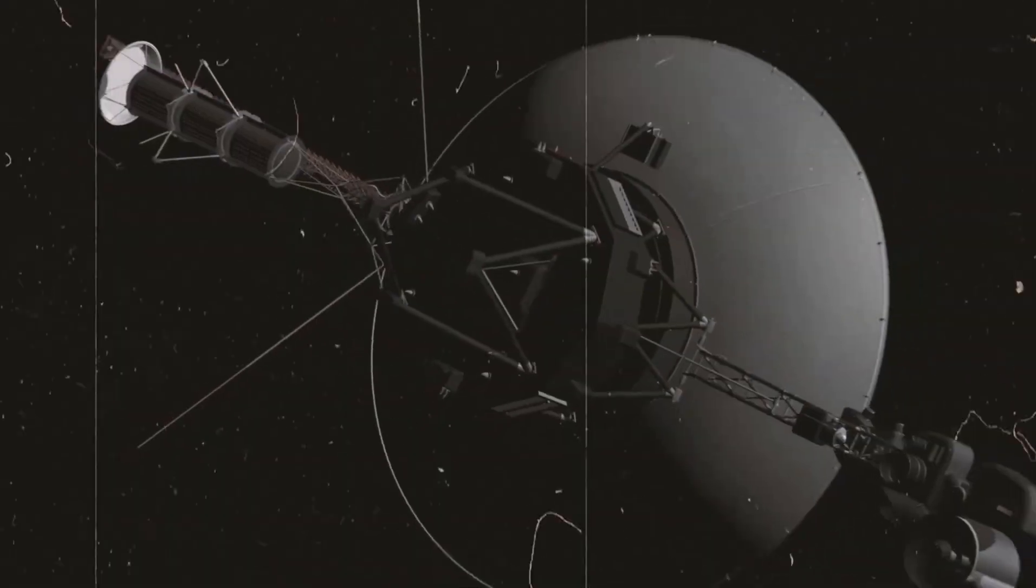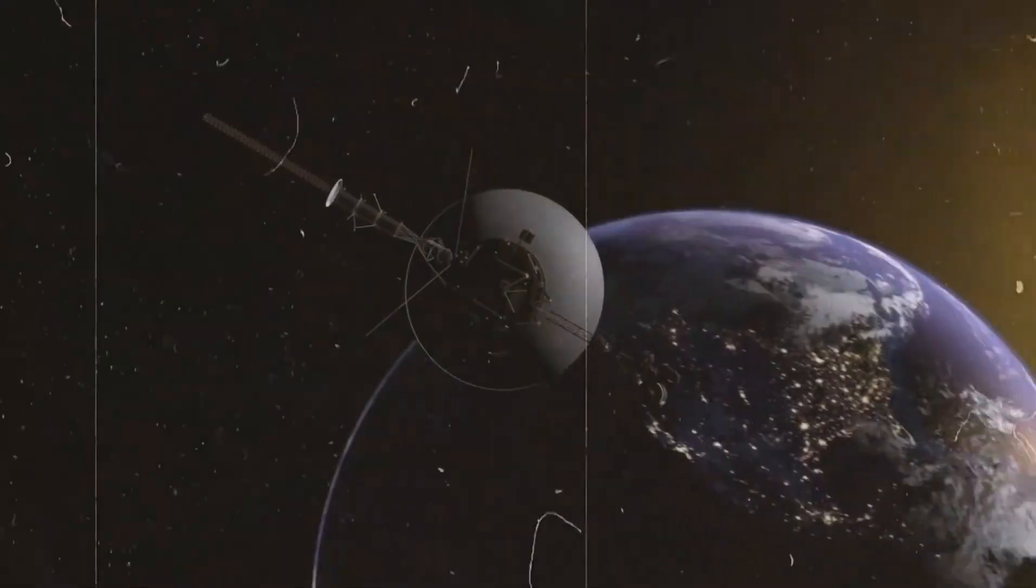Voyager turned its camera back towards Earth, and it's what basically amounts to Earth's first ever selfie. That picture was taken, and there were these pale blue dots.